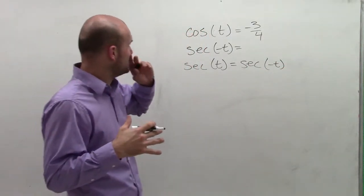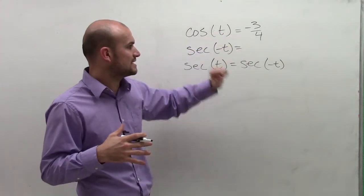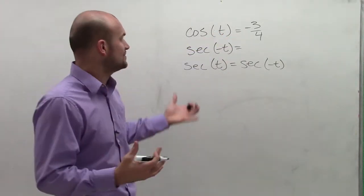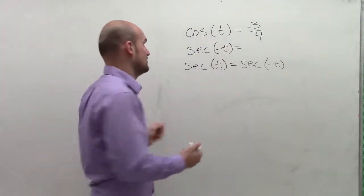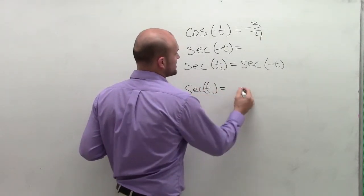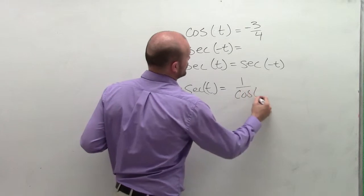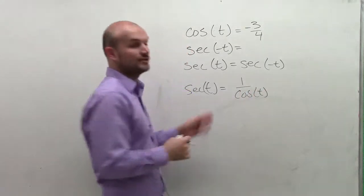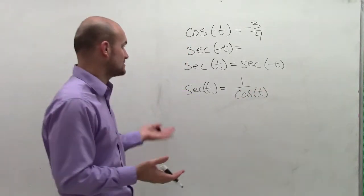So if I'm given cosine of t equals negative 3 fourths, all I need to do is figure out what the secant is of that. And remember, that secant of t is equivalent to 1 over cosine of t. So these are what we call reciprocal identity or reciprocal functions.